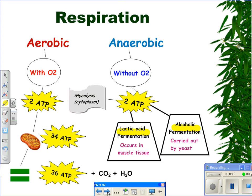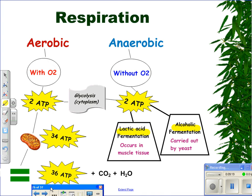In aerobic respiration, we yield a total of 36 ATP — that's a very efficient process, a lot of ATP from just one glucose molecule. In anaerobic respiration, where there's no oxygen present, we yield the two ATP out in the cytoplasm during glycolysis, but that's where it ends. Then the cell will perform fermentation. Depending on the type of cell carrying out the anaerobic respiration, we'll see different types of fermentation. If this occurs in muscle tissue, you will see lactic acid fermentation. If it is carried out by yeast cells, we will get alcoholic fermentation.